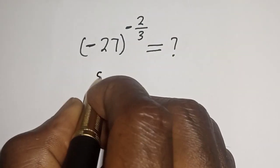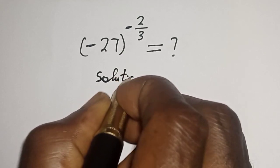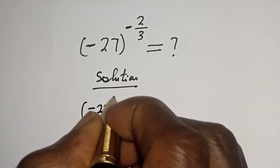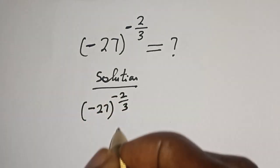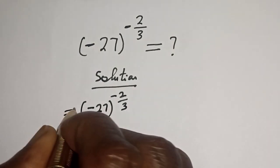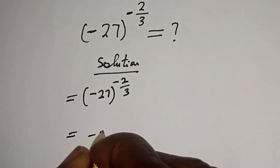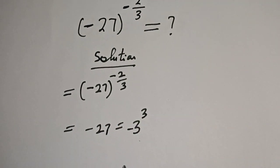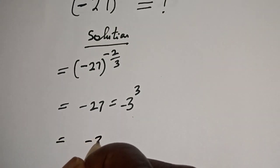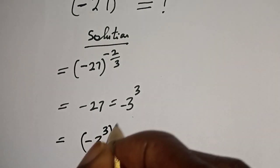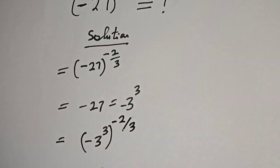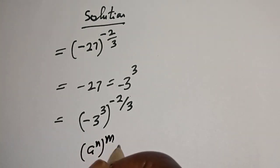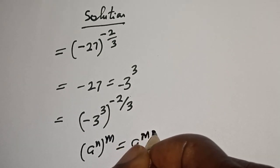Solution: we have minus 27 raised to the power of minus 2 over 3. Then minus 27 is equal to 3 raised to the power of 3, so we put a minus here. This gives us minus 3 raised to the power of 3, to the power of minus 2 over 3. If you have a raised to the power n, to the power of m, this is equal to a raised to the power m times n.